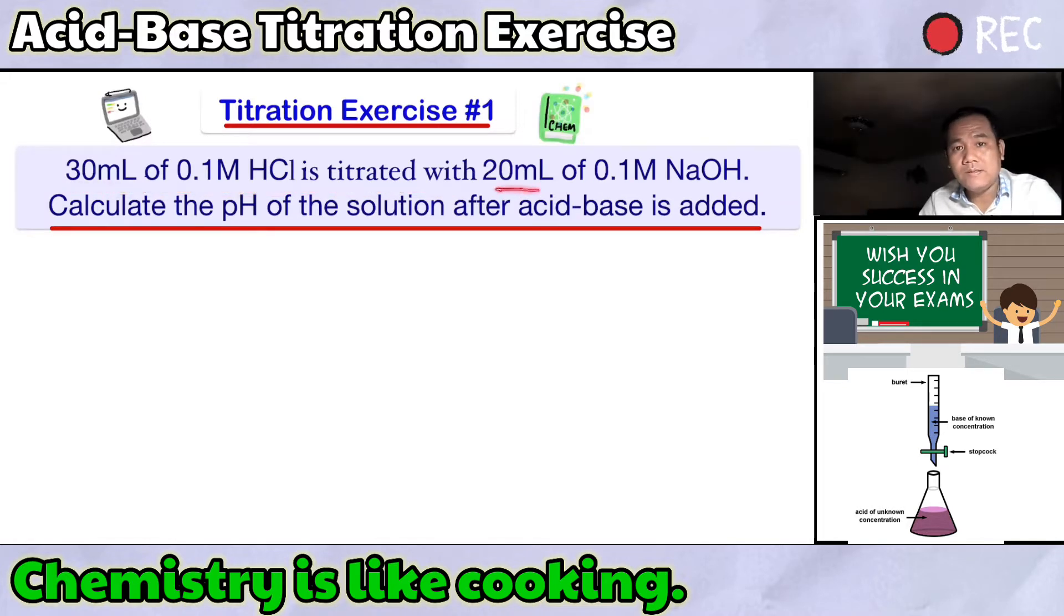We have 30 milliliters of 0.1 molarity hydrochloric acid titrated with 20 milliliters of 0.1 molarity sodium hydroxide. Calculate the pH of the solution after acid and base is added.